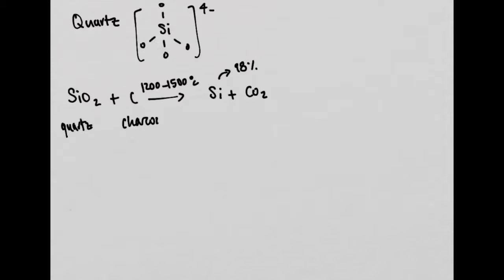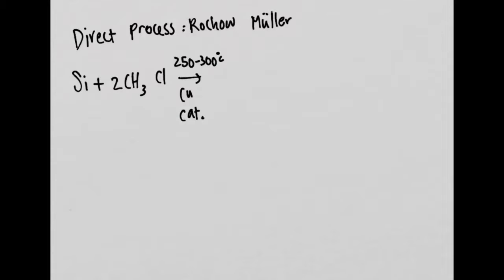From quartz SiO2, we are able to make metallurgical grade silicon by reacting it with charcoal at high temperatures. This very pure silicon at about 98% is then used to make organosilicon products from chloromethane using the direct process Rochow-Müller at high temperature, with the help of a copper catalyst.